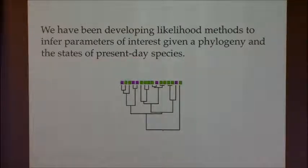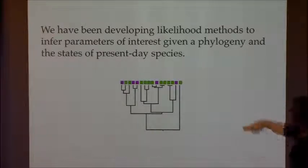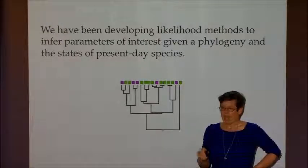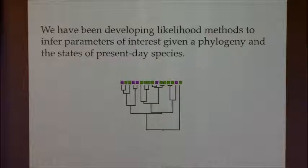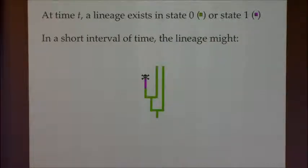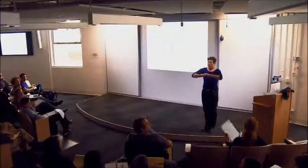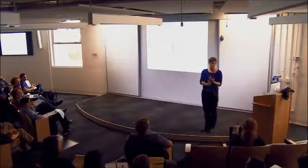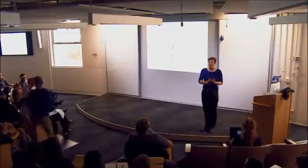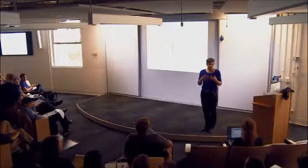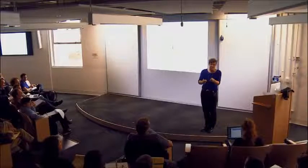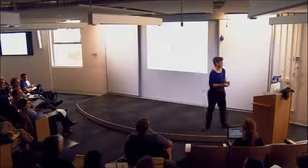We've been developing likelihood methods to infer parameters of interest along a phylogeny — primarily Wayne Maddison, my colleague at UBC, and my PhD student Rich FitzJohn. Before walking through the model, someone asked: a trait here, could it be one gene or many genes? A trait can be anything — whether you're sexual or asexual, whether you're in the tropics or temperate zone, or an amino acid presence or absence at a site. So a trait is very broadly defined.